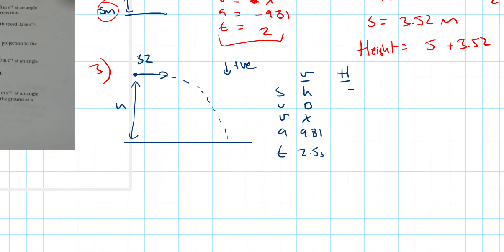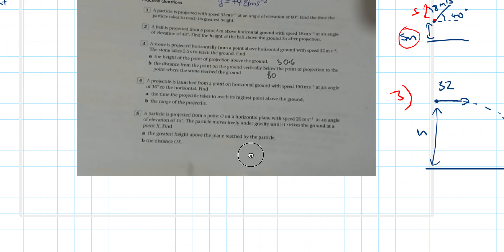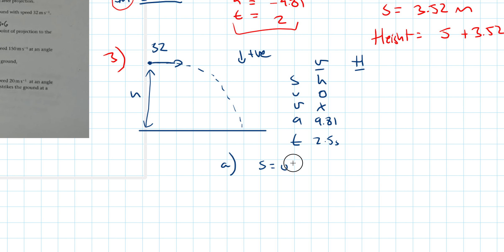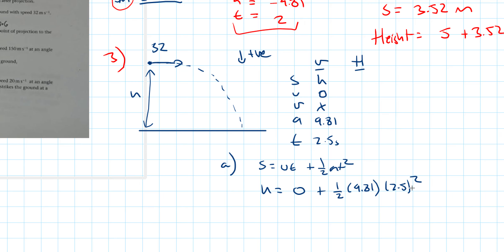For part a, we have enough vertical values. Using s equals ut plus half at squared (formula without v): h equals 0 times t plus half times 9.81 times 2.5 squared. So h equals half times 9.81 times 2.5 squared, which equals 30.65625 metres. Therefore h equals 30.7 metres to one decimal place.